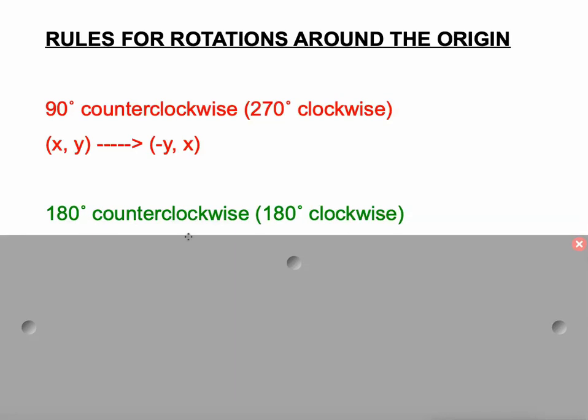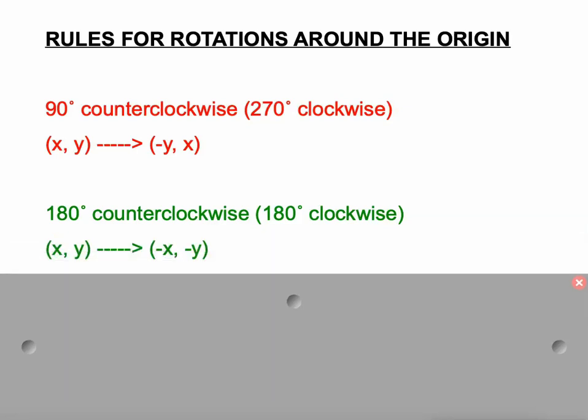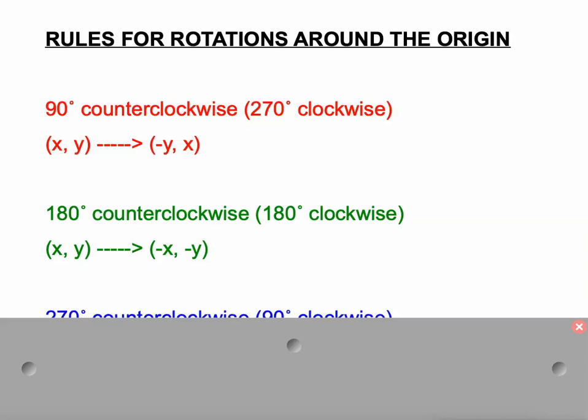A 180 degree counterclockwise rotation, which is the same as a 180 degree clockwise rotation, is going to be where XY becomes negative X, negative Y. So our new X is the opposite of our old X and our new Y is the opposite of our old Y.